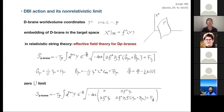In principle, because we have the worldsheet theory describing non-relativistic string theory, we should be able to start with the worldsheet theory and perform the beta function calculation directly, deriving the equations of motion in spacetime that determine the dynamics of the non-relativistic D-branes. From that we should get a matching with the DBI action, and that's what I'll do next.